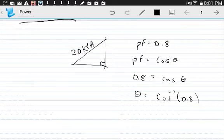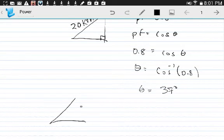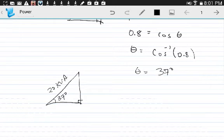Let me look at my calculator. So 0.8 cosine... the angle is going to be 37 degrees. Now that we have the angle, we have 20 kVA and 37 degrees, and we want to find the power.